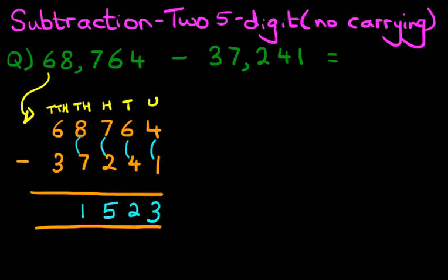And lastly, the ten thousands column. 6 minus 3. That's right, the answer is 3.